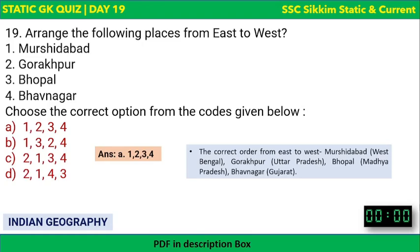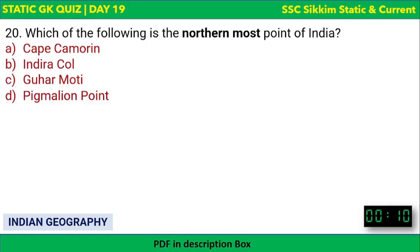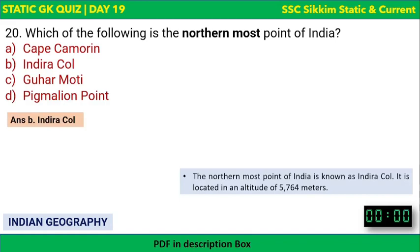The last question: Which of the following is the northernmost point of India — Cape Comorin, Indira Col, Guhar Moti, or Pygmalion Point? The northernmost point of India is Indira Col, located at an altitude of 5,764 metres.